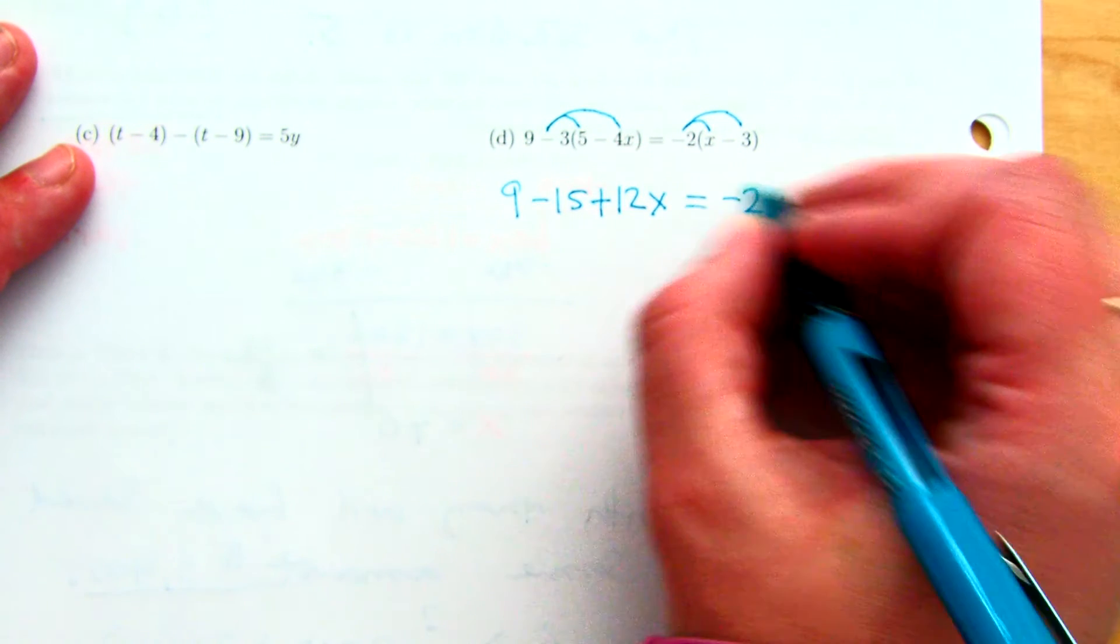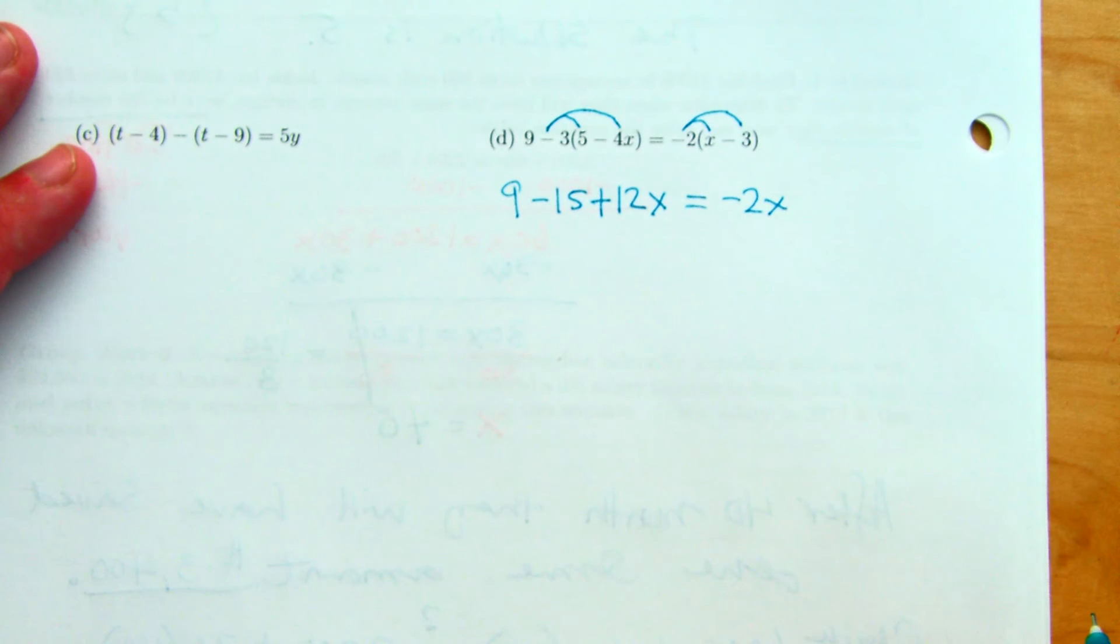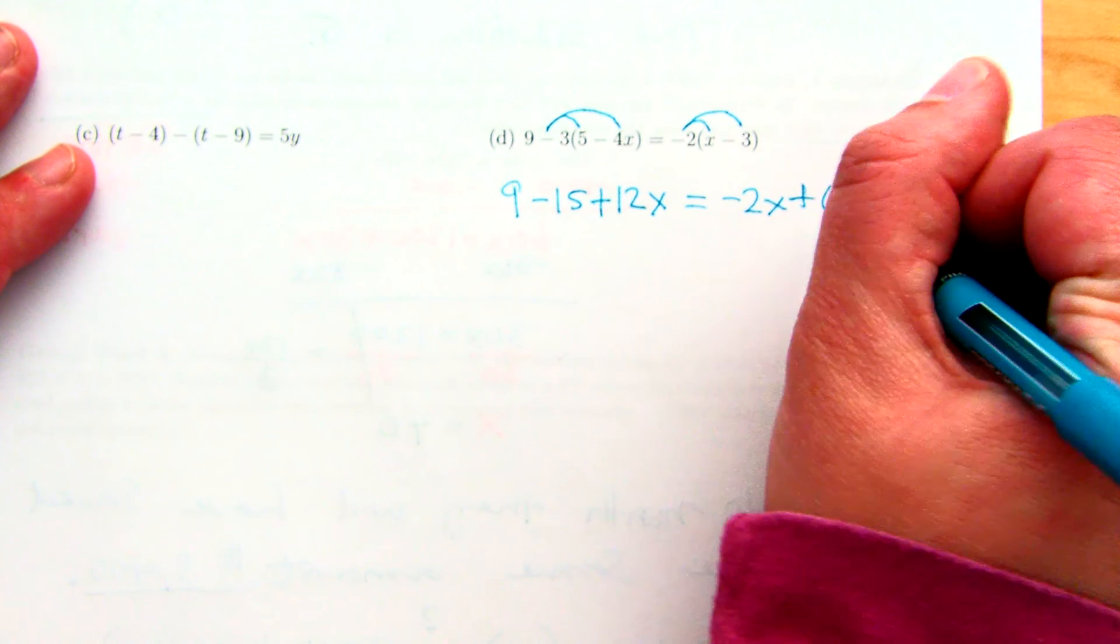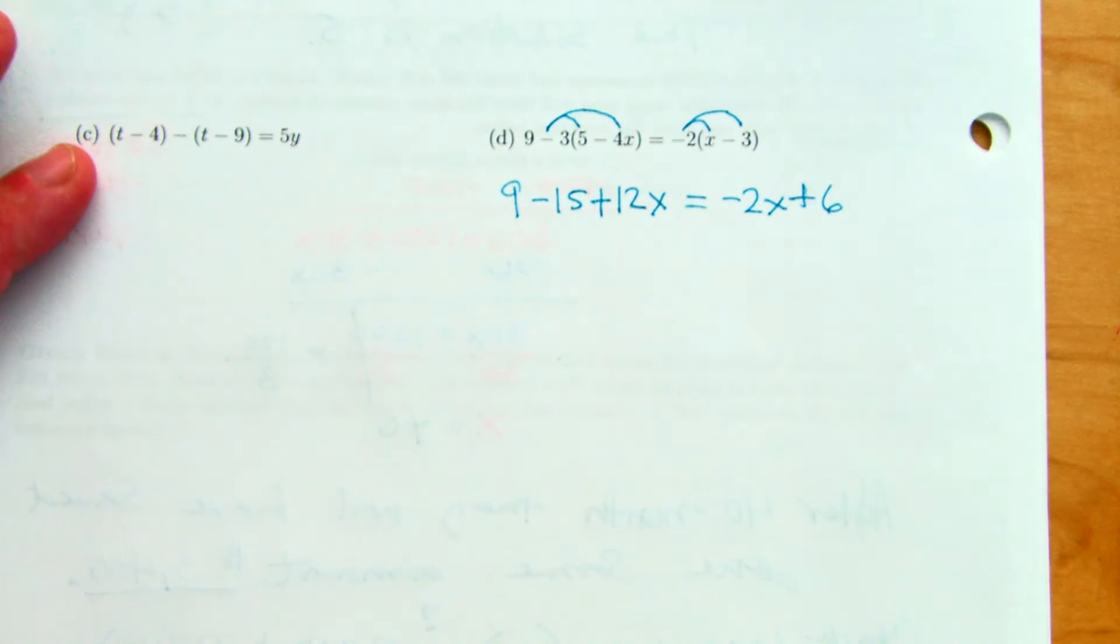We have to multiply it. And that's basically the same thing as a negative 3 when we distribute. We have 9 minus 15. Negative times a negative is a positive 12x. Good. Now, let's simplify it. Use the distributive property on the other side.